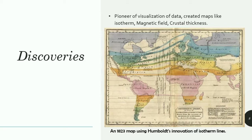Another very important discovery of Alexander von Humboldt was that, along the way, he measured the shape of the land, its temperature, air pressure, and the varying strength of magnetic fields. By connecting features of identical temperatures, he created contour maps with lines of similar temperature, which he named isotherms. As we know today, the isotherm is a very important part of meteorological mapping — it was first invented by Humboldt. He was the pioneer of the visualization of data, making maps of isotherms, magnetic fields, and crustal thickness.